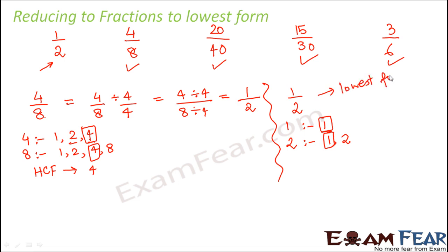So let us pick up some other example from here. Let us say 15 by 30. So let us write the common factors of 15. So it is 1, 3, 5, and 15.